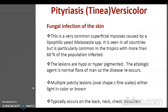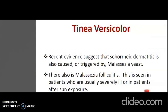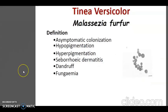Tinea versicolor is particularly common in the tropics, with more than 60% of the population infected. The lesions are hypo- or hyperpigmented. The etiological agent is normal flora, so disease occurs when conditions are favorable. Multiple patchy lesions, either light in color or brown, occur typically on the back, neck, chest and shoulders. Recent evidence suggests seborrheic dermatitis is also caused or triggered by Malassezia yeast. Malassezia folliculitis is seen in severely ill patients or after sun exposure. Conditions promoting growth include poor health, sweat, greasy skin, chronic bacterial infections and steroid use.